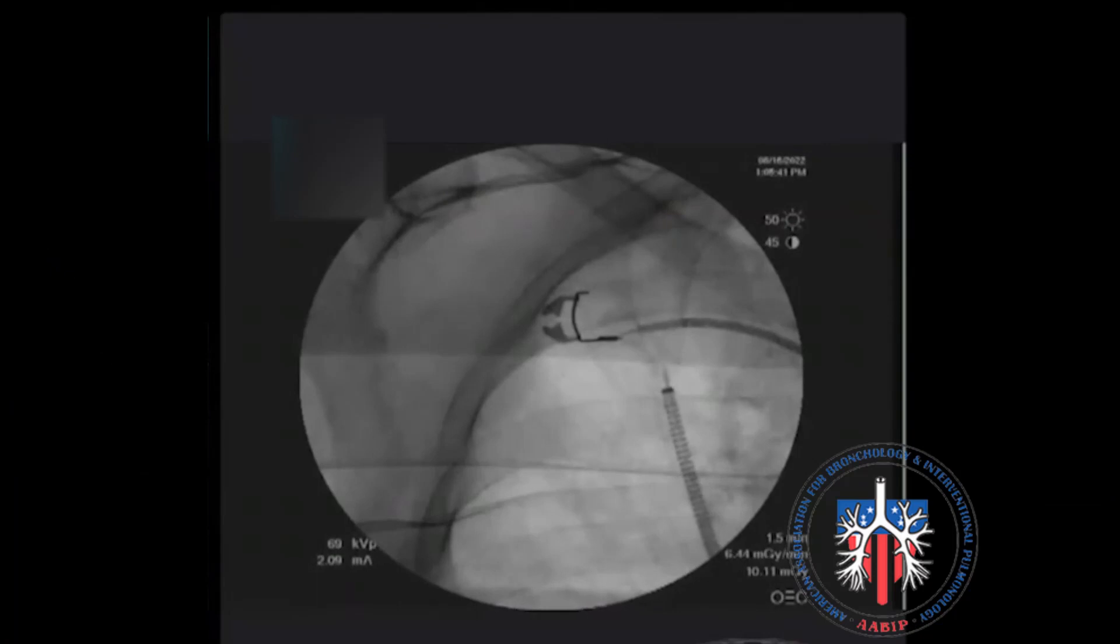The cryoprobe achieves a circumferential freezing around the tip. The average freezing time is between 3 to 6 seconds.